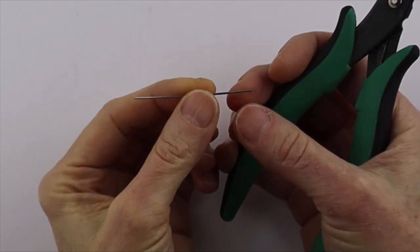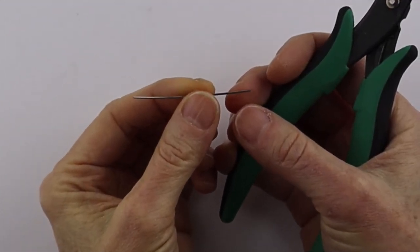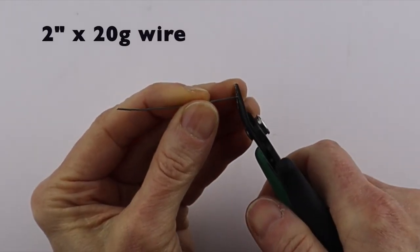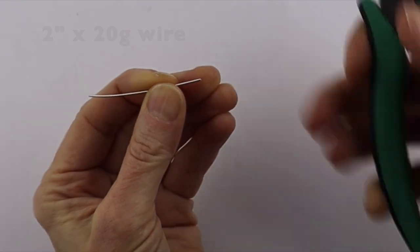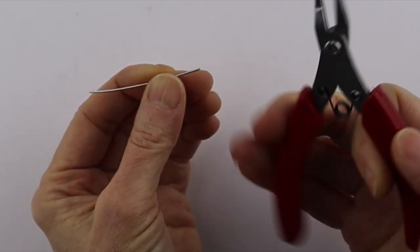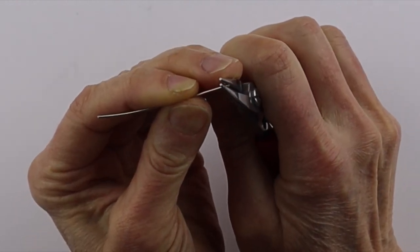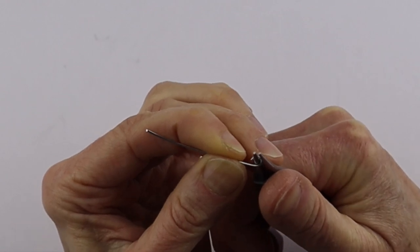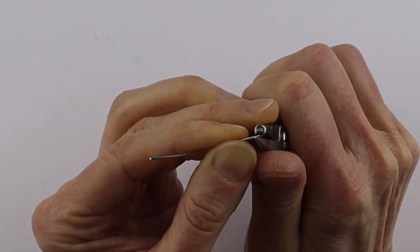To start, we're going to attach the beads to the O-ring. Take about a two inch piece of wire, make sure you cut it flush on the end, and take your round pliers and just form a little loop. Just bring it around.